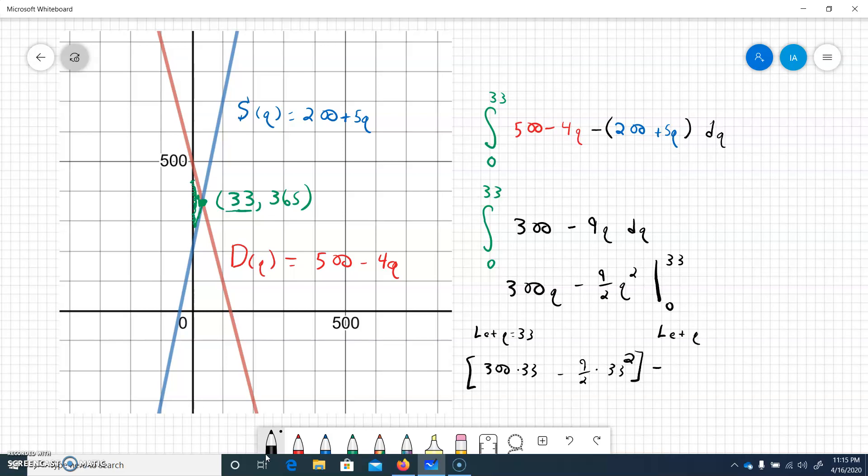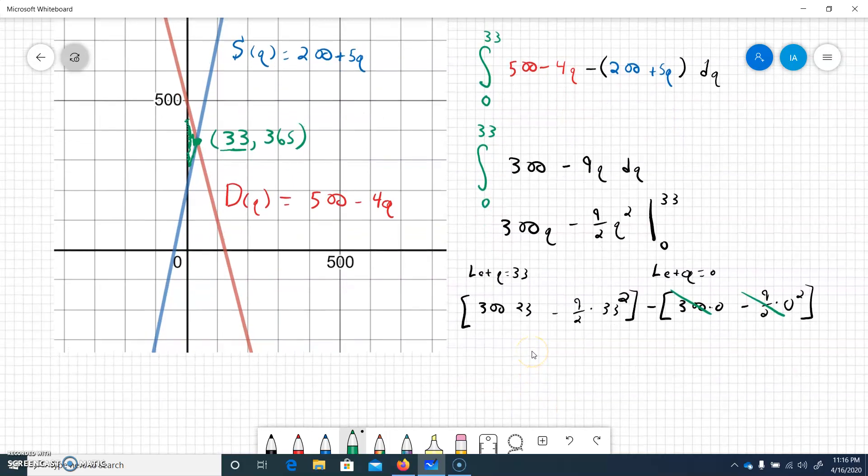So I get 300 times 33 minus 9.5 times 33 squared. Minus, and then we'll let Q be zero. It's insignificant here because 300 times zero minus 9.5 times 0 squared, all of that will just kind of cancel out. So let me see if I can move this up a little bit. So that was kind of messy here. That was 33. We'll pick up my calculator here. So I got 300 times 33, which gives me 9,900.